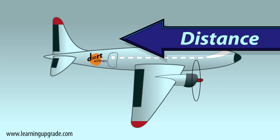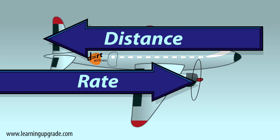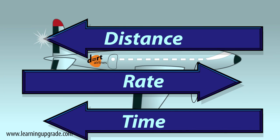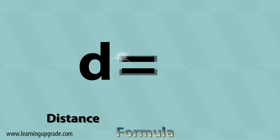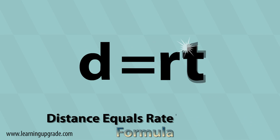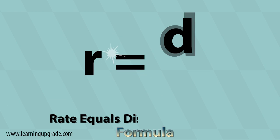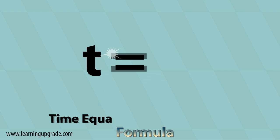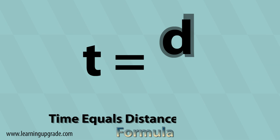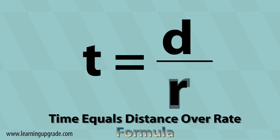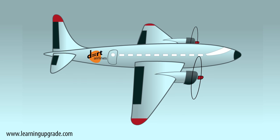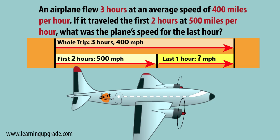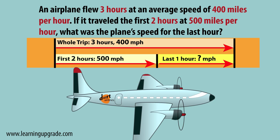Here's how you solve for distance, rate, and time. To find the distance: rate times time. To find the rate: distance over time. To find the time: distance over rate. First, read the problem and make a picture.